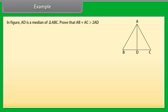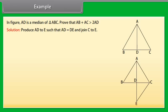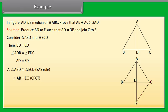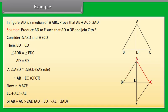Example: In the figure, AD is a median of triangle ABC. Prove that AB plus AC is greater than 2 AD. Solution: Produce AD to E such that AD is equal to DE, and join CE. Consider triangle ABD and triangle ECD. Here BD is equal to CD, angle ADB is equal to angle EDC, and AD is equal to ED. Therefore, by SAS congruence rule, triangle ABD is congruent to triangle ECD. Therefore, AB is equal to EC by CPCT. Now in triangle ACE, EC plus AC is greater than AE, or AB plus AC is greater than 2 AD, because AD is equal to ED which implies AE is equal to 2 AD.